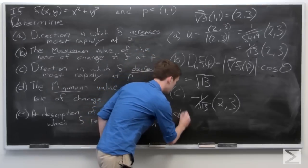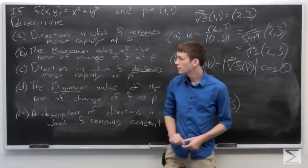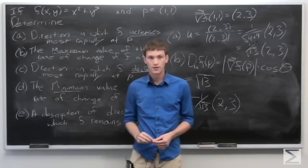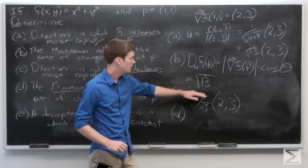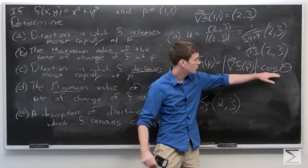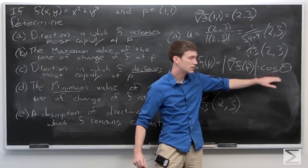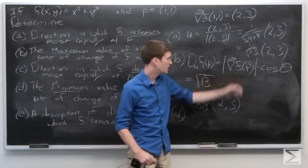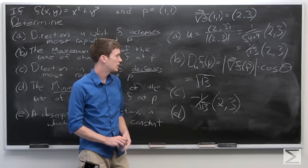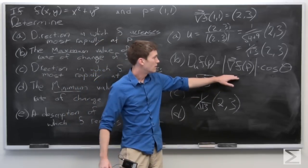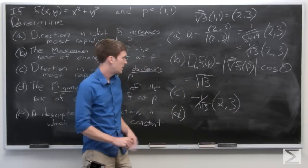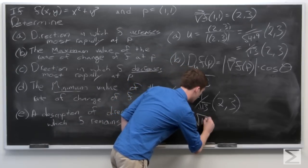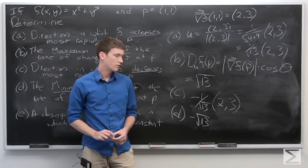Part d is equally as easy. We are asked to find the minimum value of the rate of change of f at p. That's just going to be the negation of the maximum, since cosine's minimum value is negative 1. So it will be negative 1 times the norm of the gradient vector of f at p, giving us negative square root of 13.